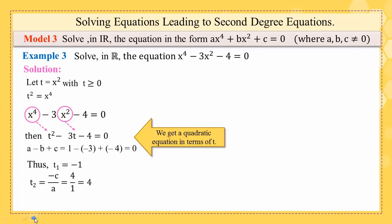As you see here, t1 is negative so it is rejected because we have the condition that t is greater than or equal to 0. But t2 is positive, so t2 is accepted.